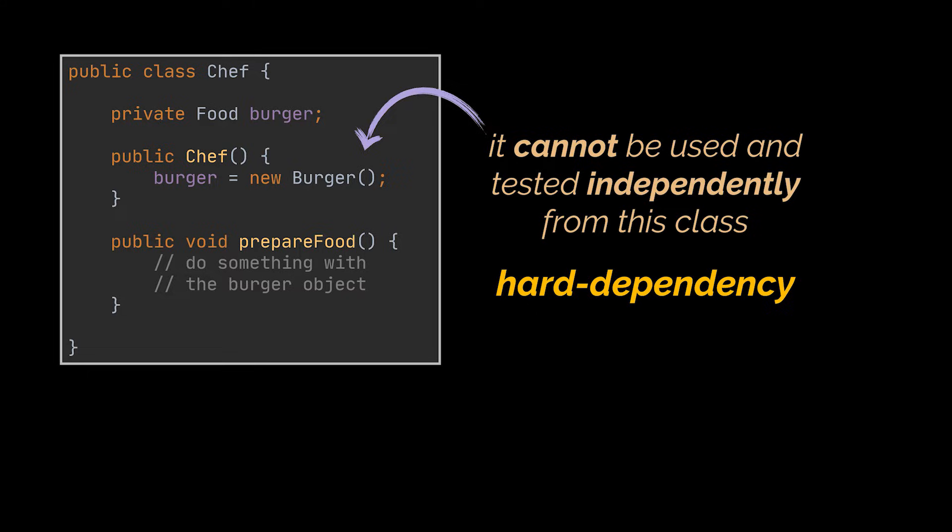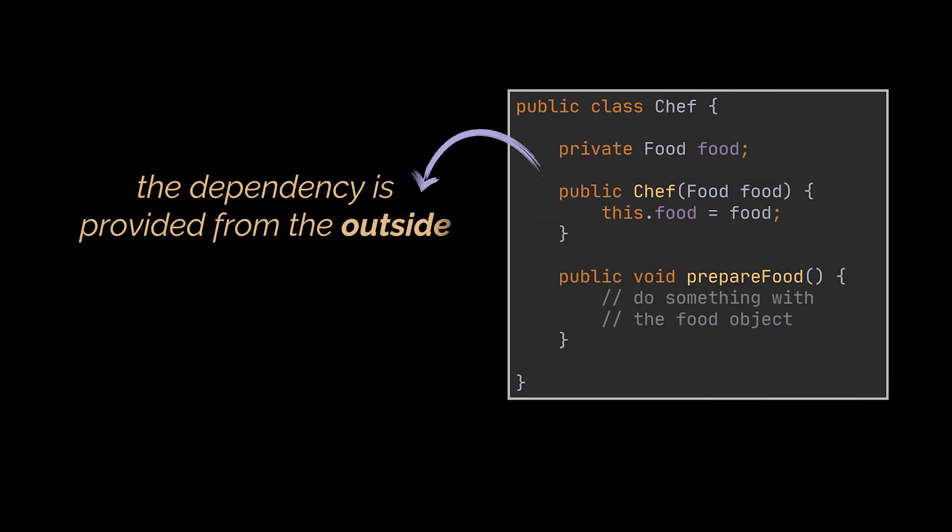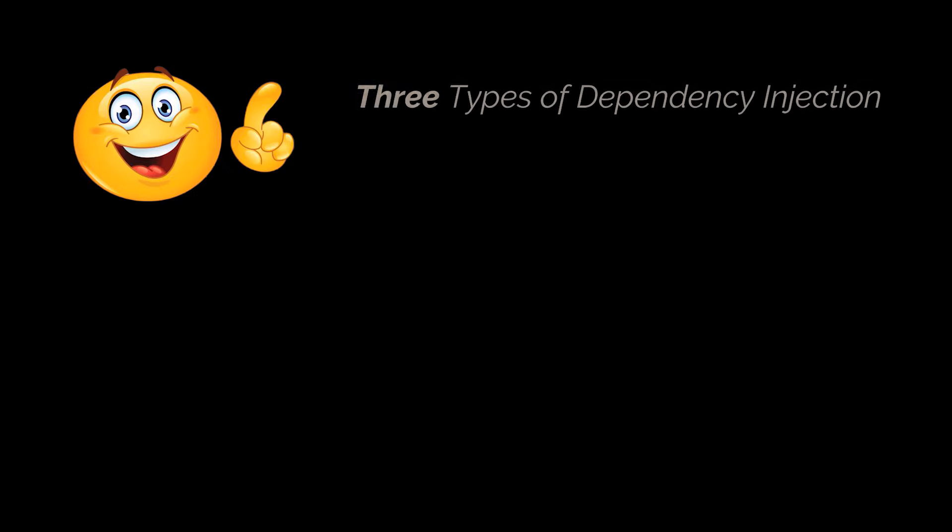However, when we used dependency injection, the dependent class was no longer a concern to us as it is provided from the outside. This way if the object's implementation changes in the future, it is no longer the dependent class's responsibility to figure out what actually changed.